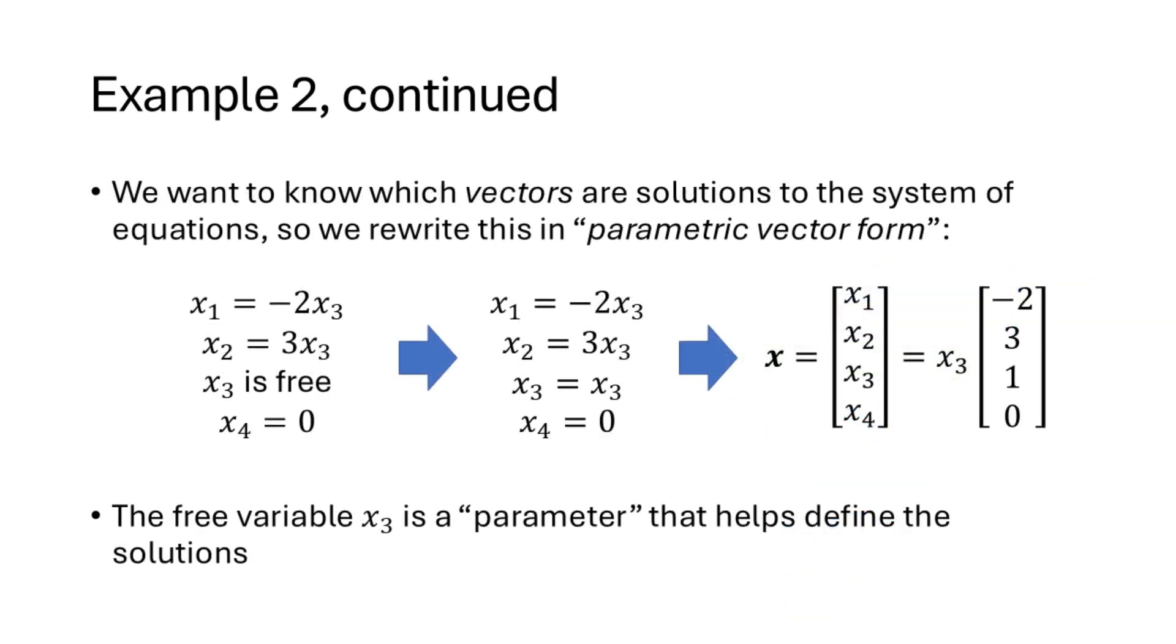Now in this homogeneous case, we will sometimes want to write our solutions in what's called parametric vector form. We take our general solution and rewrite every free variable as that variable equal to itself. So here we have x3 being a free variable, so we write x3 equals x3. And now notice that every variable here can be written in terms of x3. x1 is negative 2x3, x2 is 3x3, x3 is 1x3, and x4 is 0, which means that x4 is 0x3. If we write that as a vector, we can write that as our solution vector x equaling the variable x3 multiplied by the vector negative 2, 3, 1, 0.